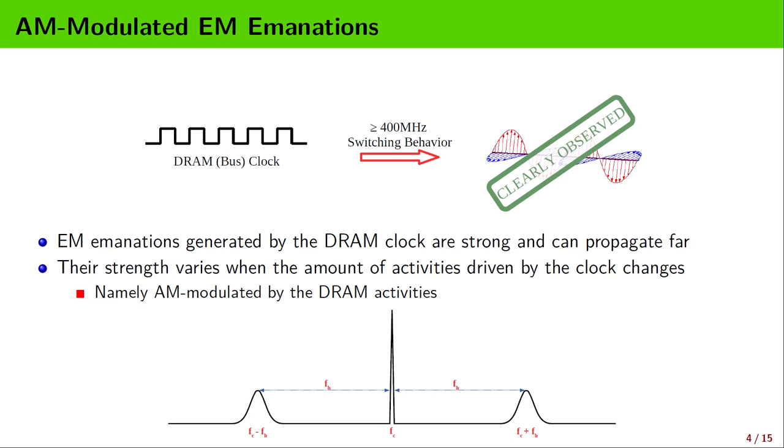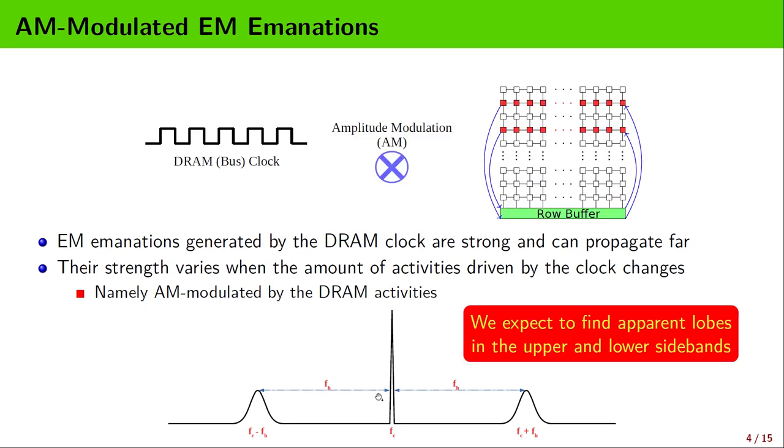We know that when a carrier signal is AM modulated, there are sidebands appearing on both sides of the carrier frequency in the spectrum. The sidebands are symmetric about the carrier frequency, and they correspond to the spectrum of the modulating activity. Since nearly regular and lasting switching behavior is associated with a hammering attempt, if the DRAM clock signal carries such information through AM modulation, we expect to identify that information via some distinctive frequency patterns in the upper and lower sidebands of the modulated DRAM clock signal.